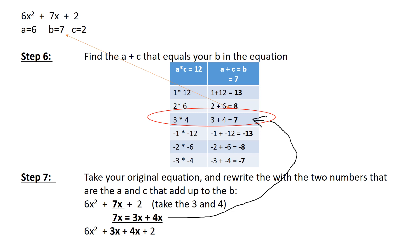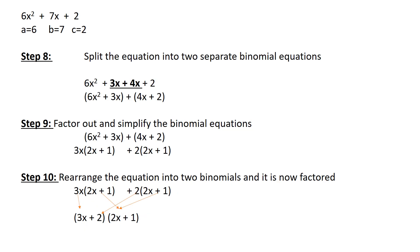So when I rewrite this equation, instead of 6x² + 7x + 2, it's now 6x² + 3x + 4x + 2. It's the same thing. I've just split up that 7x into 3x plus 4x.